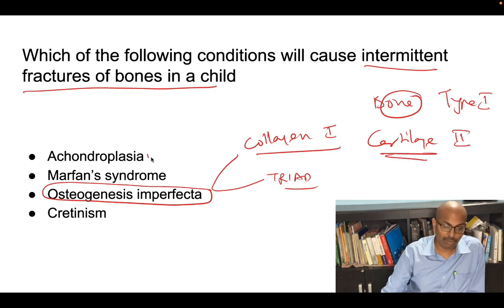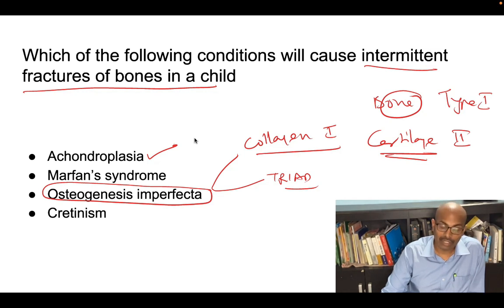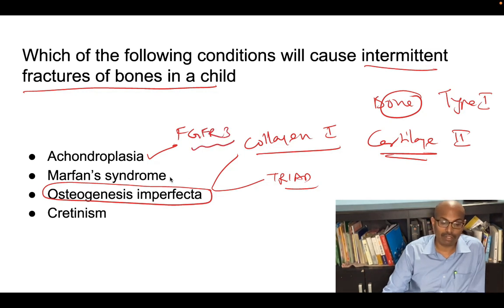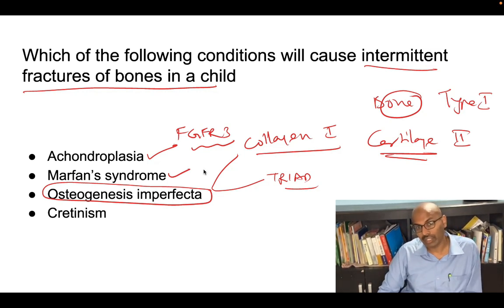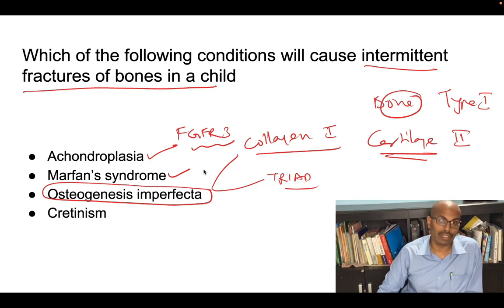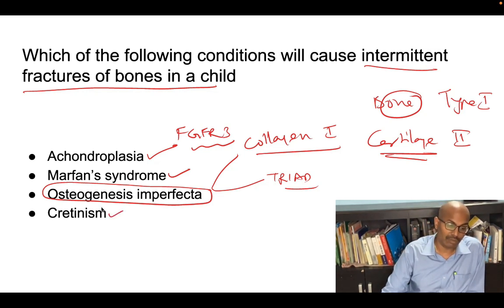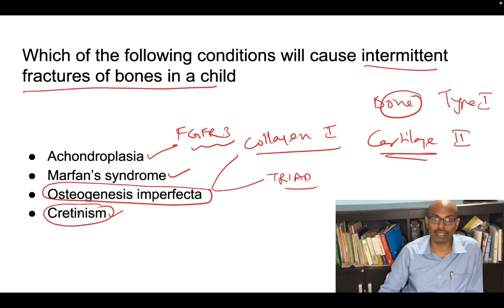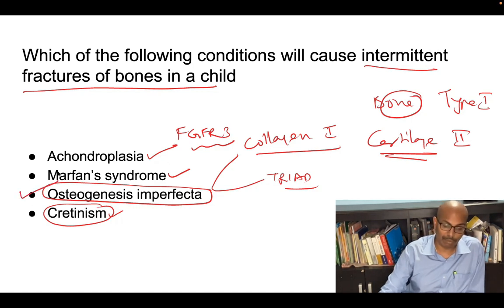Other conditions in the options: achondroplasia causes dwarfism and involves the FGFR3 gene — fibroblast growth factor receptor 3. Marfan syndrome is associated with hyperelasticity, aortic dilatation, and lens dislocation from the eyes. Cretinism is hypothyroidism in infants or the neonatal age group. The answer is Osteogenesis Imperfecta.